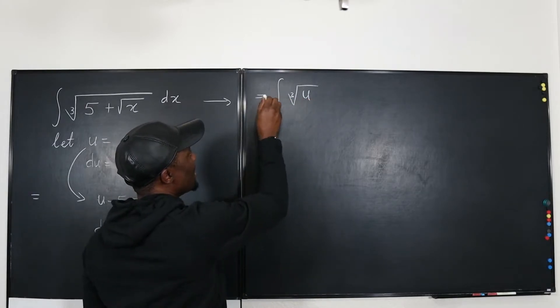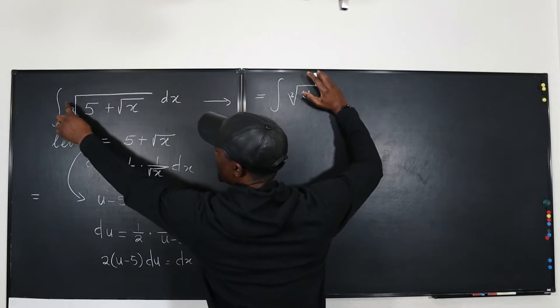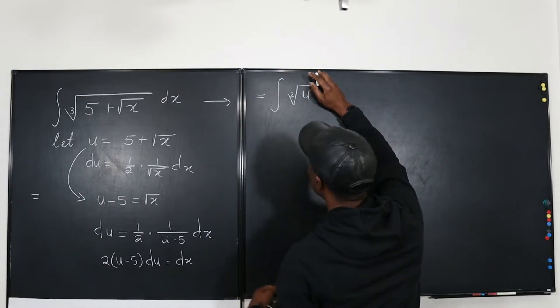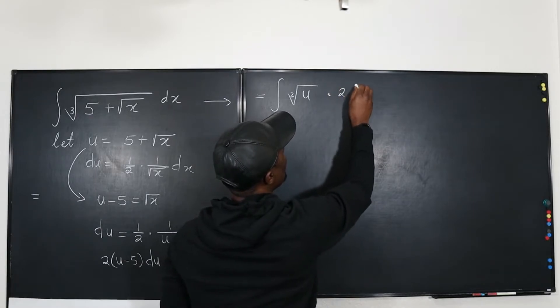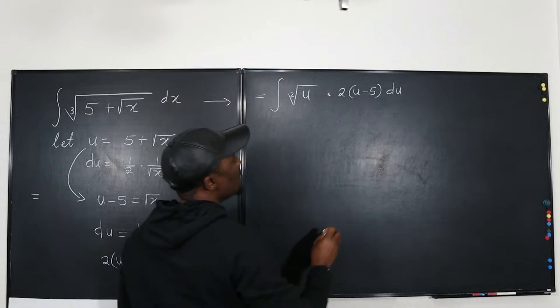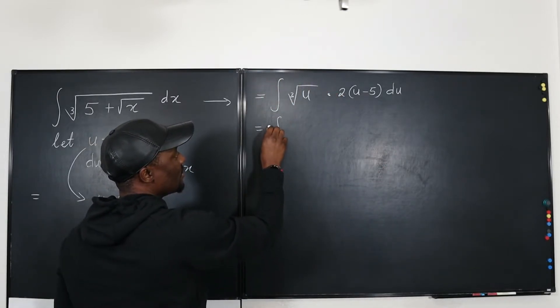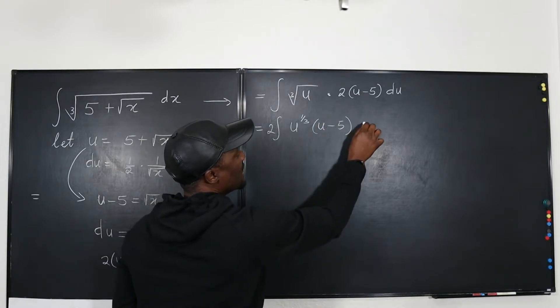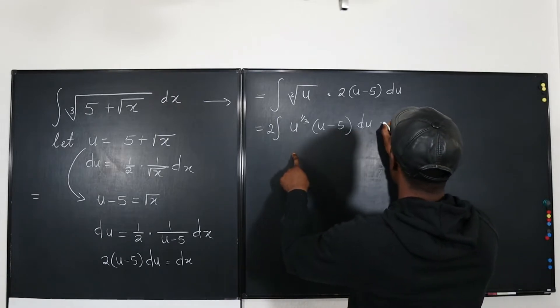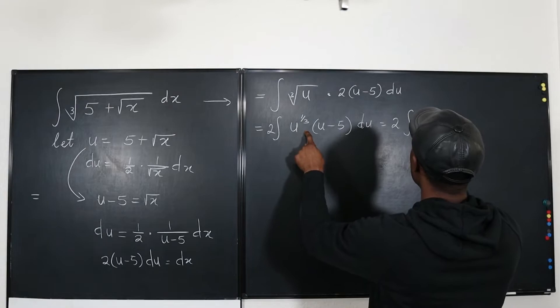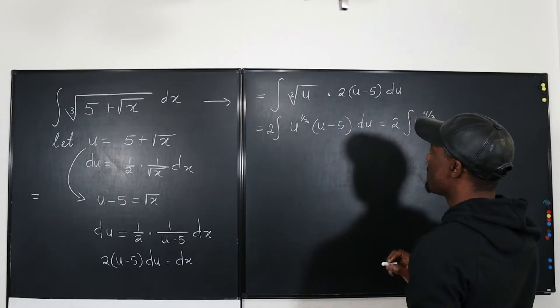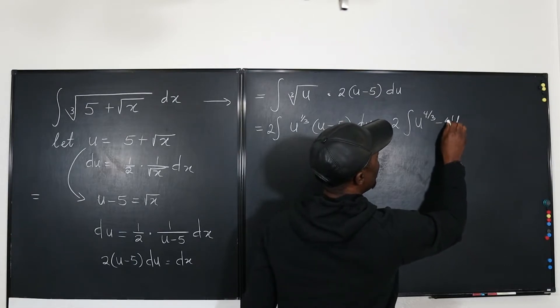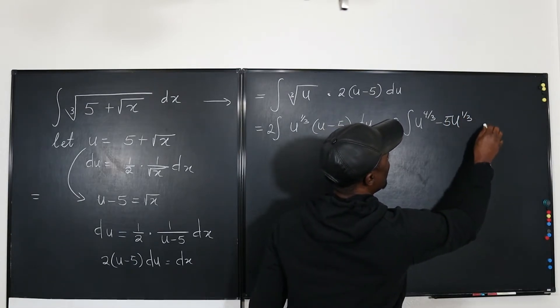So I'm going to get rid of this and say this is equal to the cube root of u - that's the function, the cube root of u multiplied by dx. And what is our new dx now? It's going to be 2 times u minus 5 du. This 2 can come over here. So we have 2 times the integral of u to the 1/3, that's what it is, times u minus 5 du. And as you can see this can be distributed. This would be equal to 2 times the integral - u times u to the 1/3 will be u to the 4/3. You see that. And then u times negative 5 is going to be minus 5 u to the 1/3. Here we go, du.